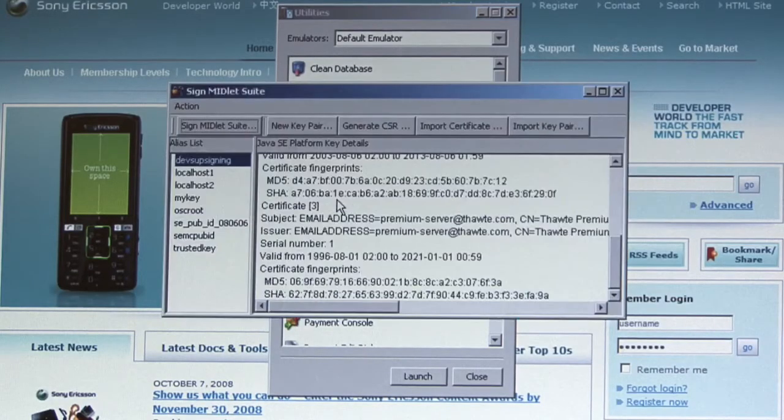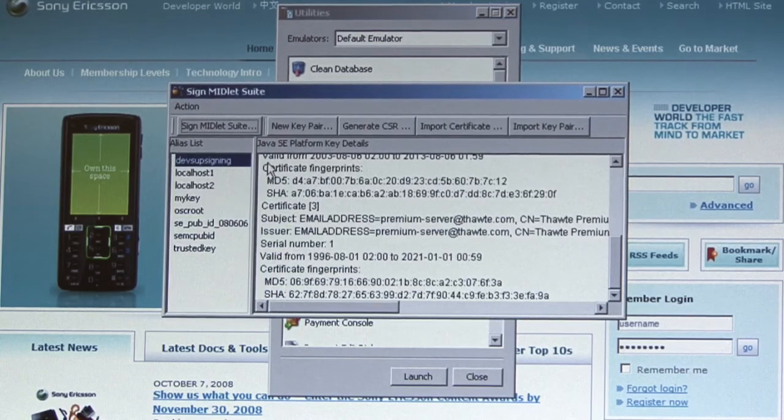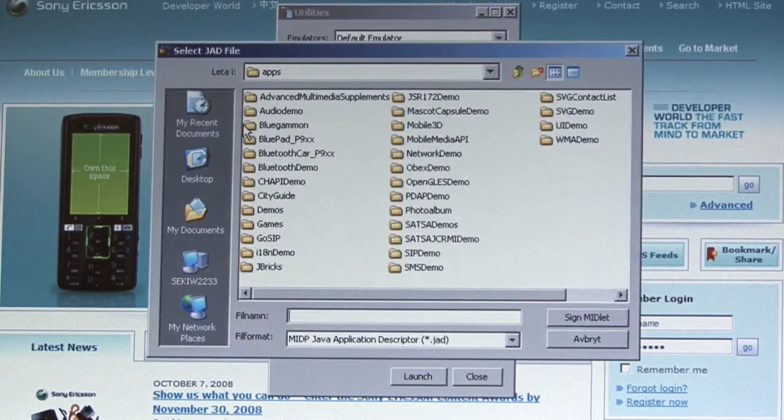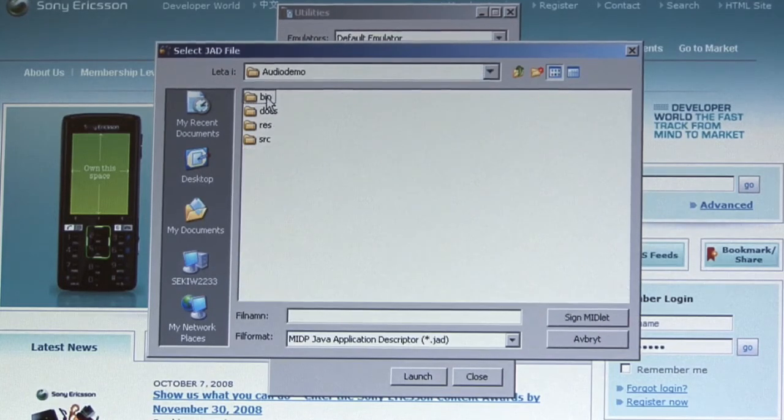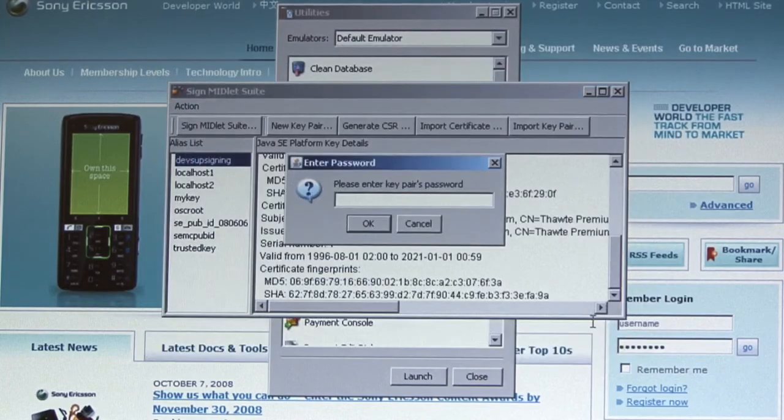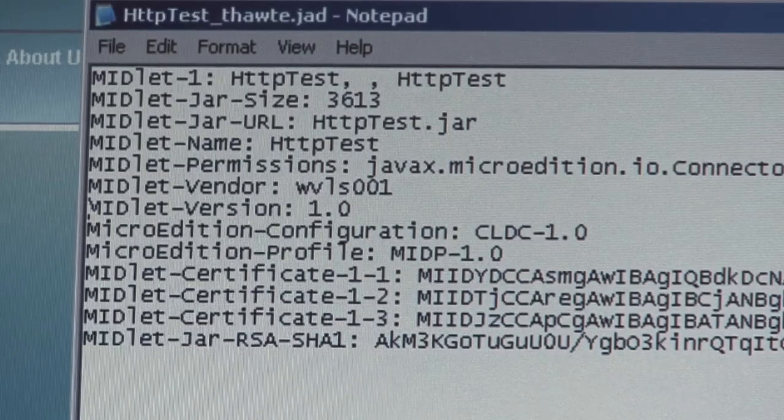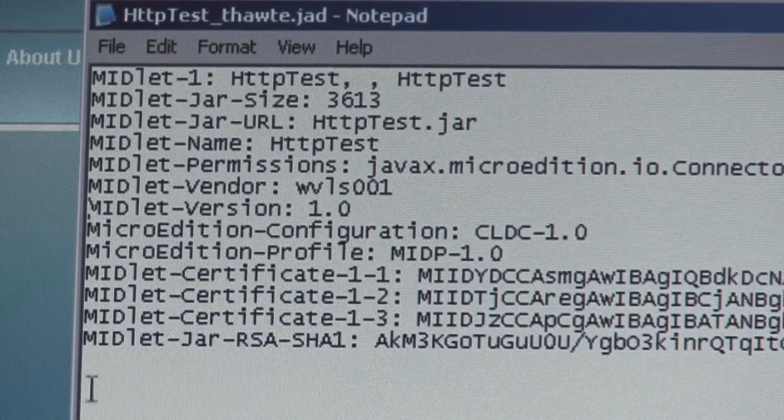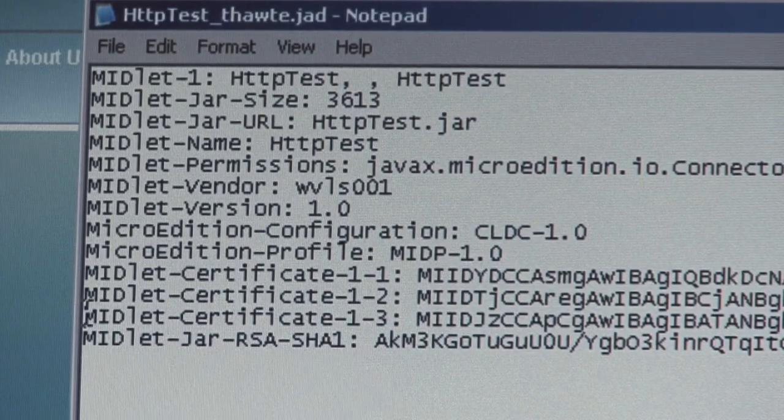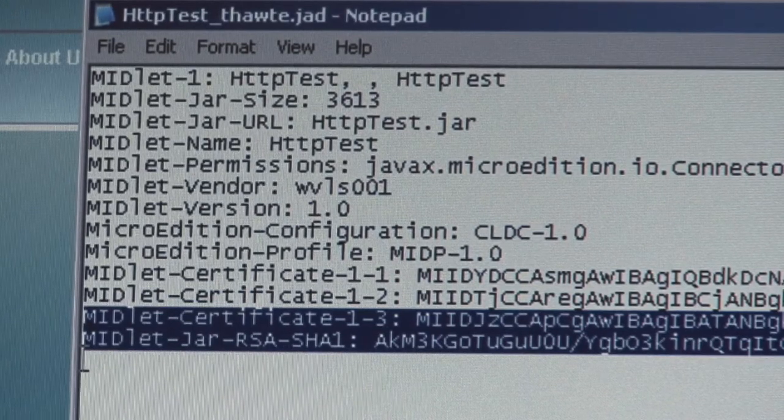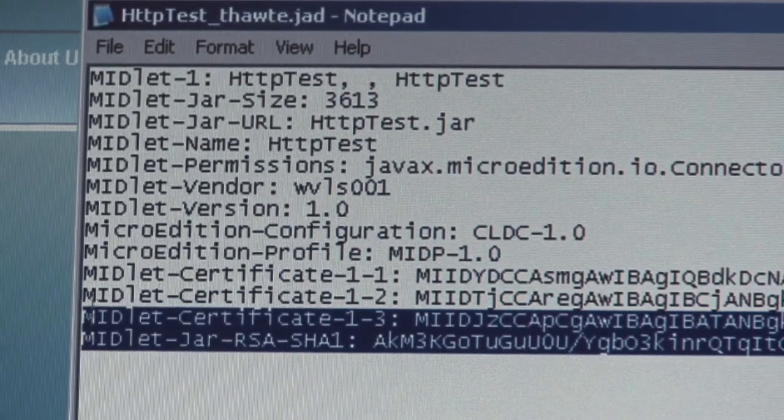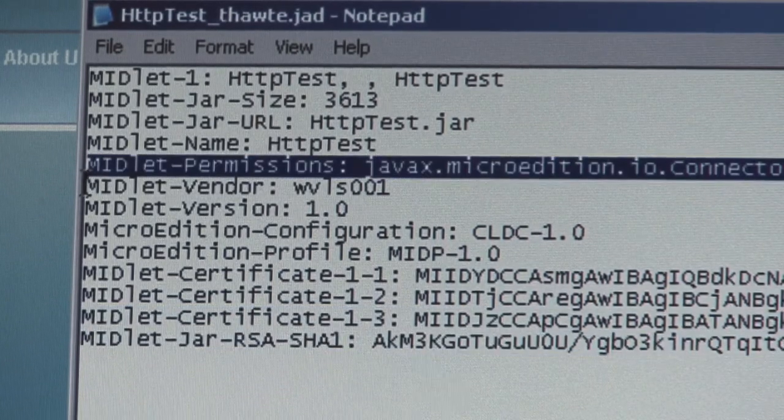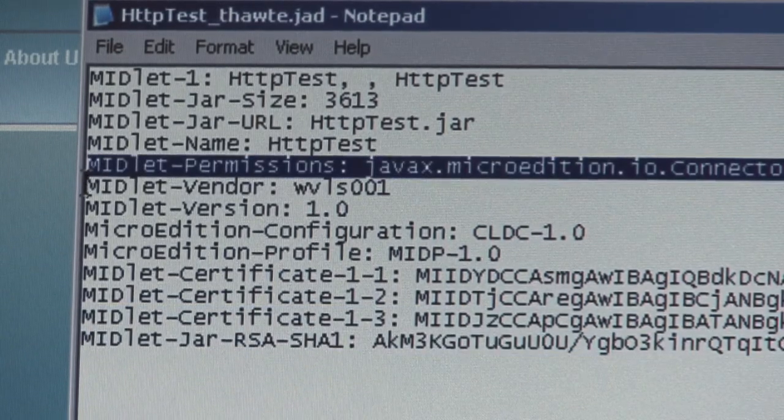In practice, signing the Java ME application is quite simple. There is a tool included in the Sony Ericsson Java ME SDK that can be used to sign the application. After the application is signed, the signature is stored in the JAD file of the application. You can see two new properties added in the JAD file. By removing these properties, you will also remove the signature. You must also add permissions to the JAD file for a signed application. This permission will grant access to the different APIs used.